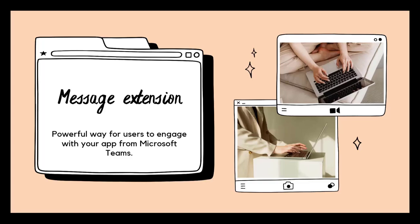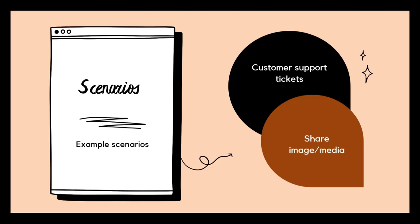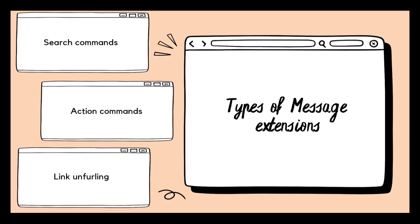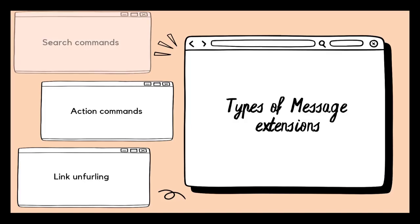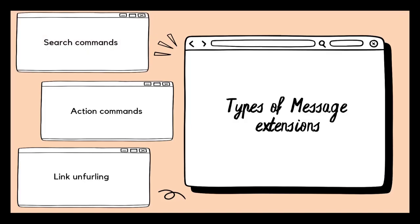Some scenarios where this will be useful: to show customer support tickets or to share image and media content. Now, types of message extensions — there are three types you can add to your Teams app today. Search commands, which will query a web service to get information and insert data from the response into a message. Think the Giphy app.